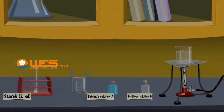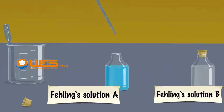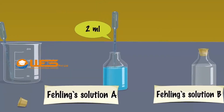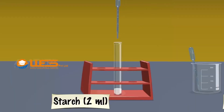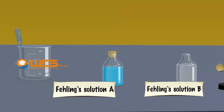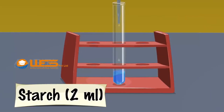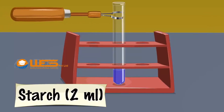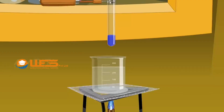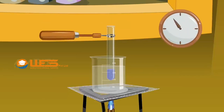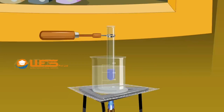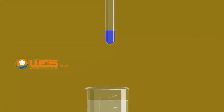Starch. Take 2 ml of Fehling's solution A using a dropper. Add it to 2 ml suspension of starch taken in a test tube. Then add 2 ml of Fehling's solution B into the test tube. The solution turns deep blue colour. Remove the test tube from the rack using a test tube holder. Place it in a boiling water bath and heat for a few minutes. The colour remains the same. The test is negative, indicating that starch does not contain reducing sugar.